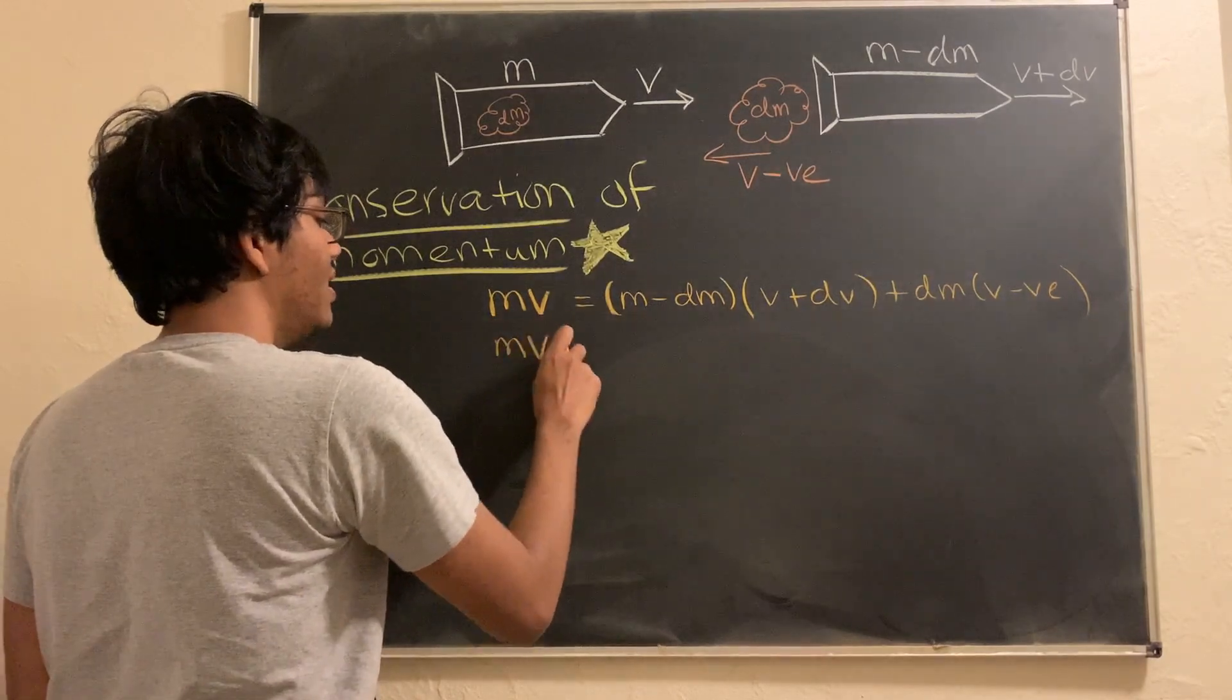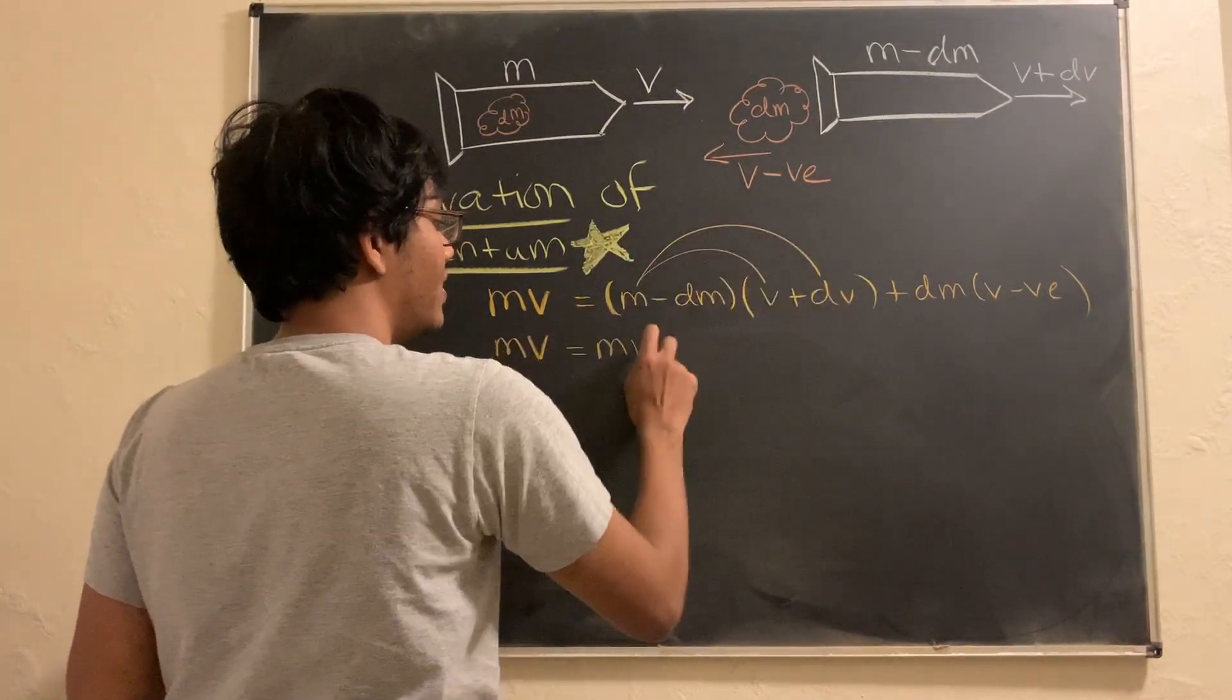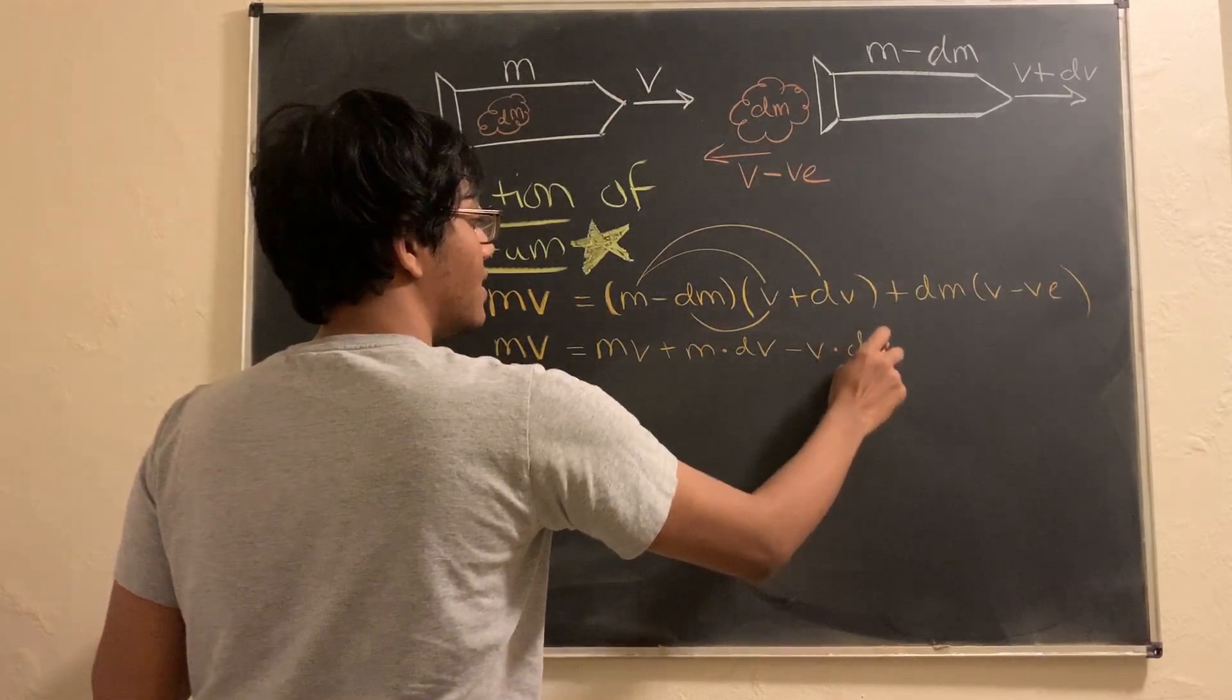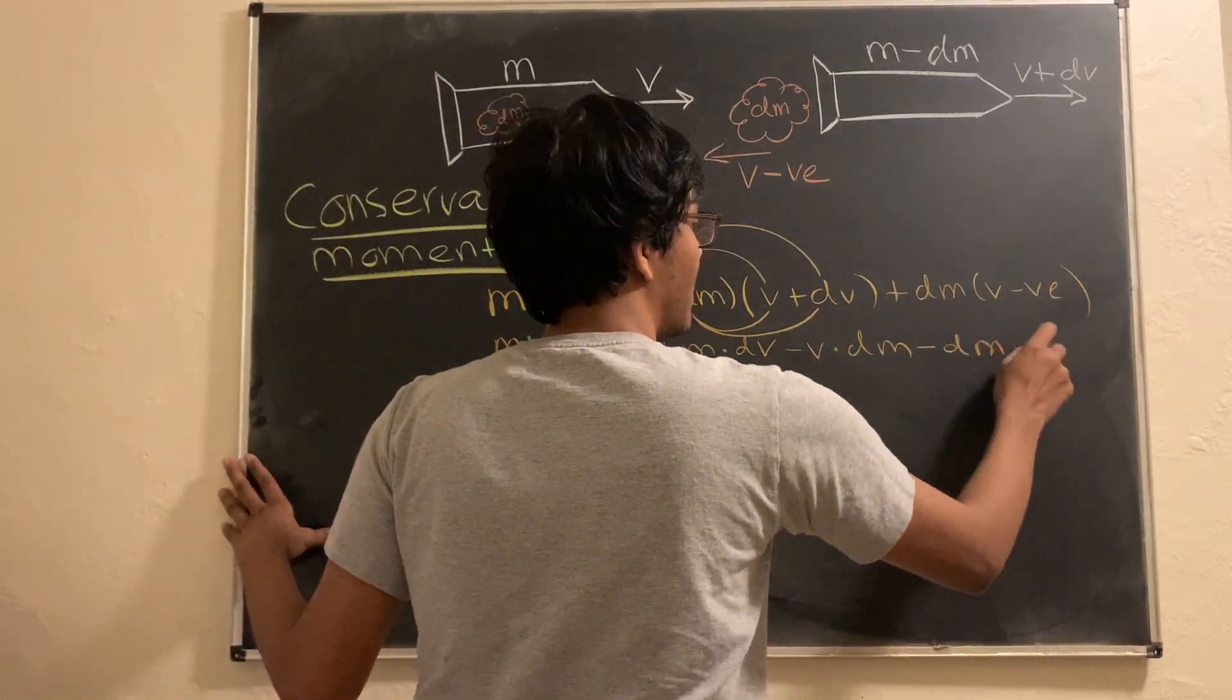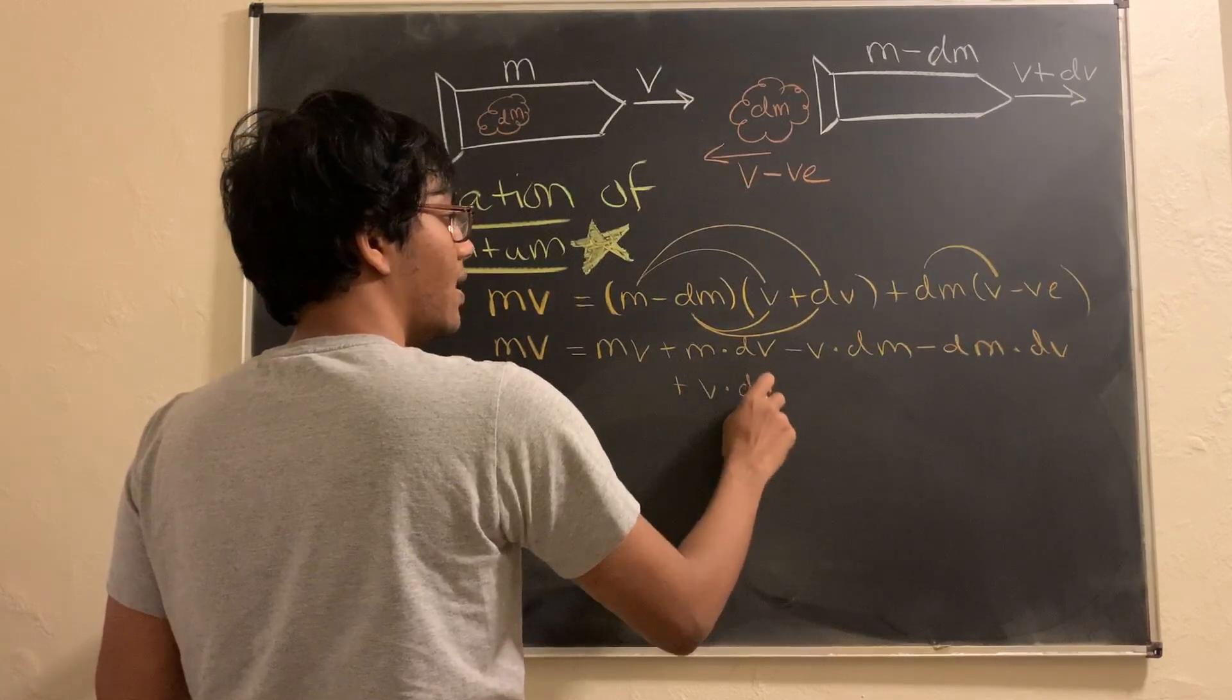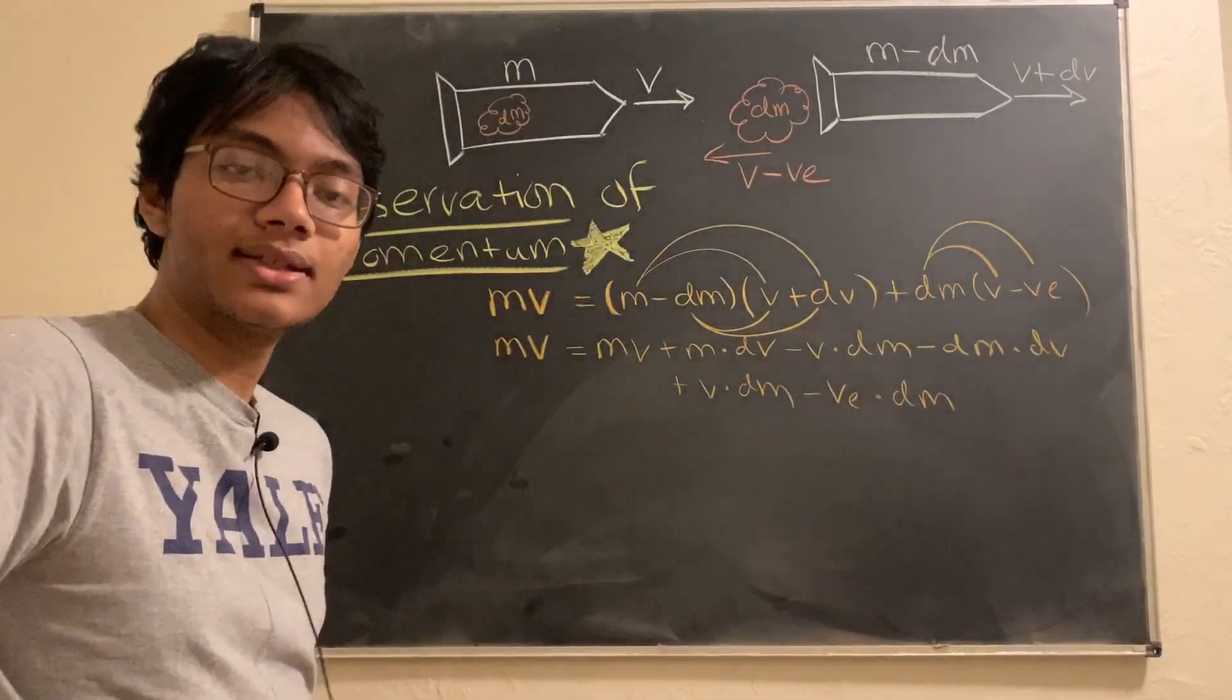On the left-hand side, we have MV. On the right-hand side, let's go ahead and distribute. We have M times V that gives us MV. We have M times dV that gives us plus M times dV. We have minus dm times dV. We also have plus V dm. So, plus V times dm and minus V exhaust times delta mass.